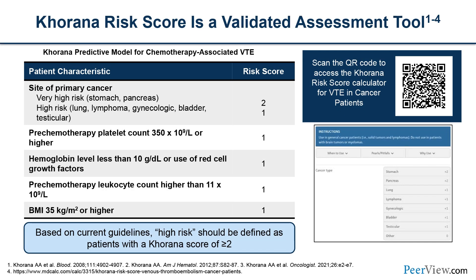Because there are so many different risk factors, a risk assessment tool was developed by our research group about 15 years ago, taking the five most important risk factors to generate a score. A score of 2 or higher is defined as high risk. You can reach two points by having a very high-risk cancer such as gastric or pancreatic cancer, or having a high-risk cancer like lung or lymphoma that gives one point, combined with a high platelet count, low hemoglobin, high white cell count, or high BMI. So it's not just driven by cancer type, but by a combination of risk factors. We've collected information on this tool including links to online calculators — please consider downloading these practice aids.